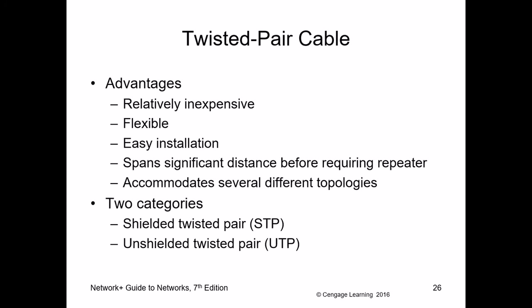The advantages of twisted pair cables are that they are inexpensive — cheap to make and buy — and most widely used for gigabit Ethernet. They are easy to maintain, troubleshoot, and install. There are two types: shielded twisted pair (STP) and unshielded twisted pair (UTP). Unshielded means they are unprotected from outside electromagnetic interference.